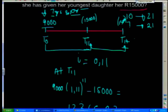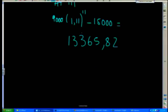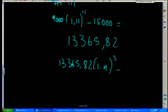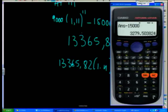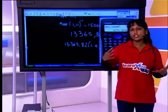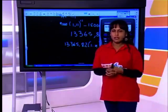We then take that balance of 13,365.82 Rand and let it grow for another three years — from time 11 to time 14 — earning interest at 11%. So it's 13,365.82 × (1.11)^3, and then we subtract the second 15,000 Rand for the youngest daughter. That leaves her with three thousand two hundred and seventy-nine Rand in the account after giving both daughters their gift of 15,000 Rand.